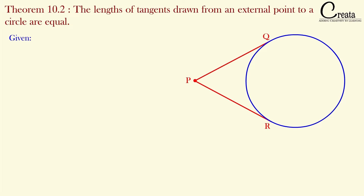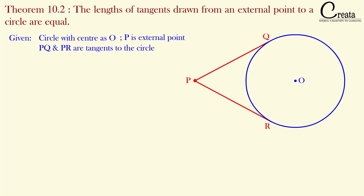In the given portion, we have a circle with center O, and P is the external point that is outside the circle. PQ and PR are the two tangents to the circle. Points Q and R are the points of contact, that is the points at which the tangent is touching the circle. Here we have to prove PQ is equal to PR, that is the lengths of the tangents are equal.